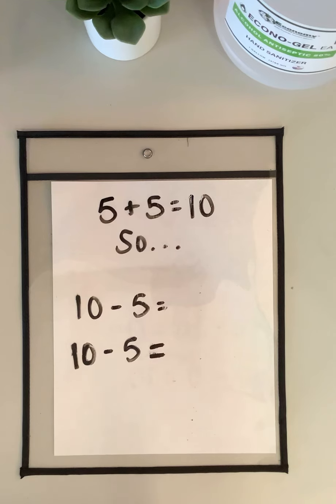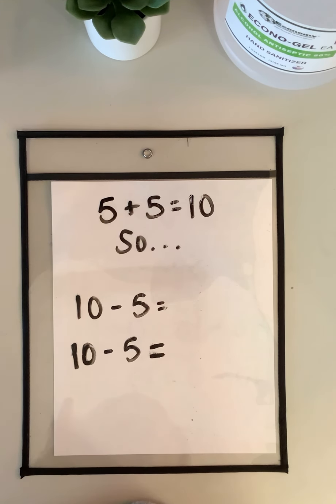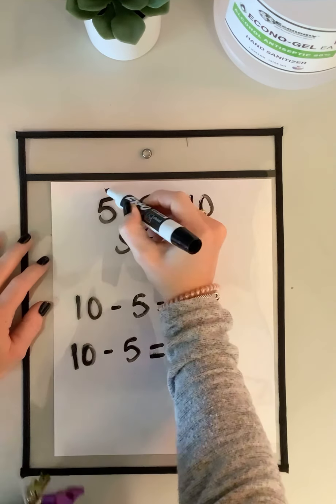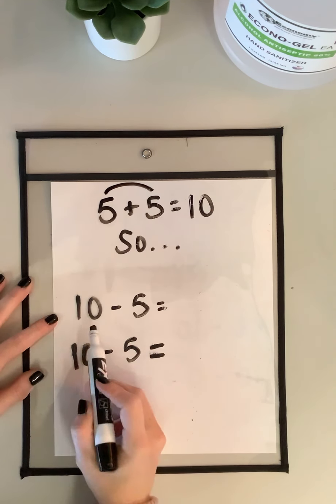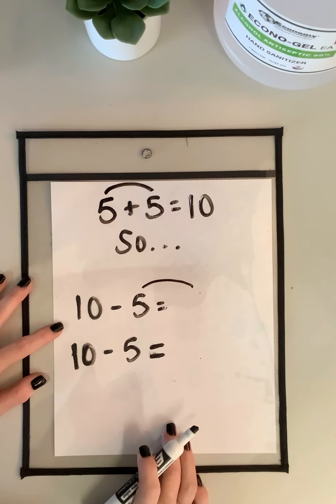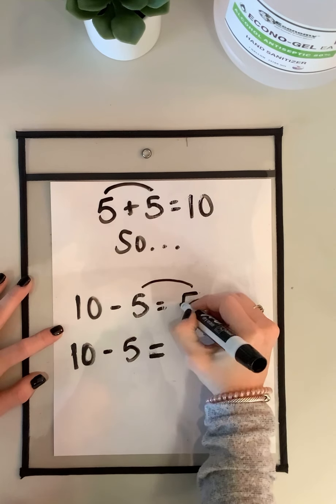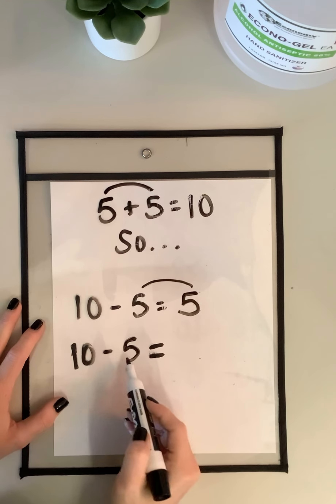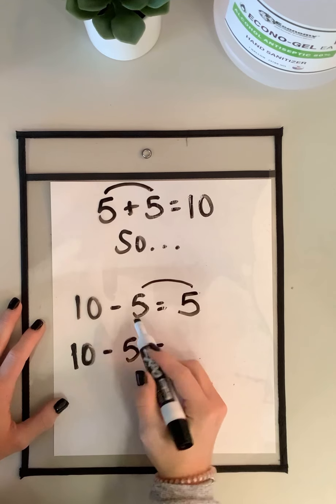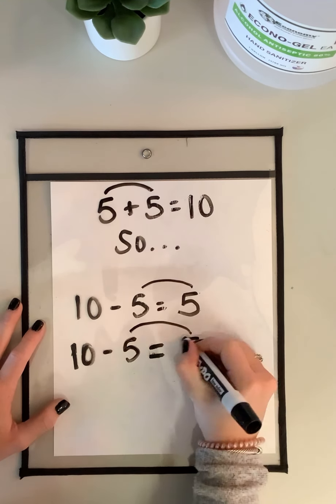I have one more example for you. I want you to do this on your own — pause the video and come up with the two differences using the subtraction 10 partner strategy. Push play when you're ready. Okay, I know that 5 plus 5 equals 10 — these are my two 10's partners. So I'm going to use my subtraction 10 partner strategy. 10 minus 5 equals what? It equals 5. Last one — I'm switching them: 10 minus 5, my other 10's partner, equals 5. They're both 5!